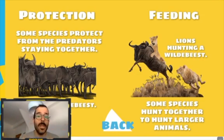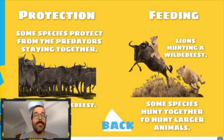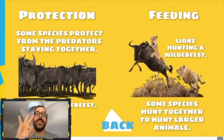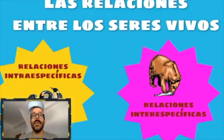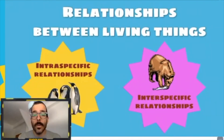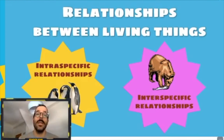On the other side, feeding refers to predators that work together to hunt larger animals. These lions are just about half the size of the wildebeest, but they join together and work as a team to hunt and eat the wildebeest. So these are the three types of intraspecific relationships: reproduction, protection, and feeding.